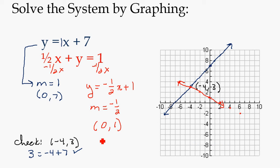And let's see. 1 half times x, which we're checking negative 4 is x, plus y, which is 3. Does that equal 1? Let's see. Half of negative 4 is negative 2, plus 3. Yep. That equals 1. So I'm confident my answer is right.